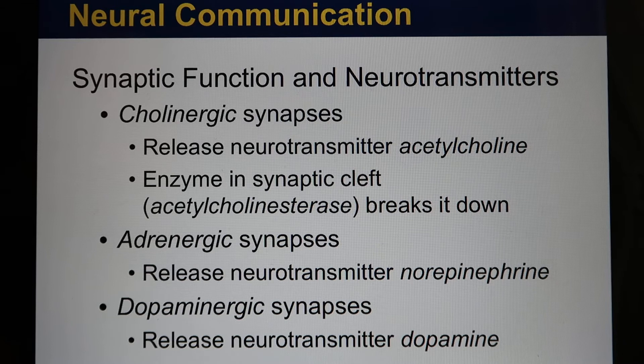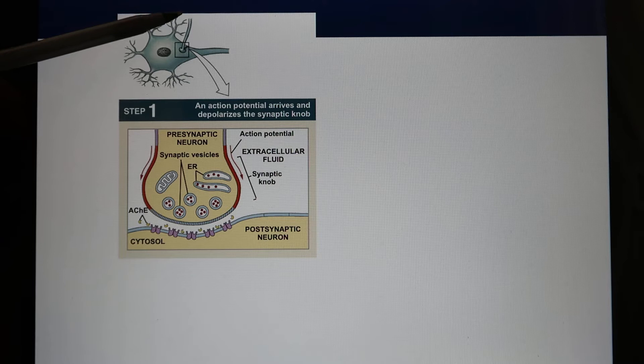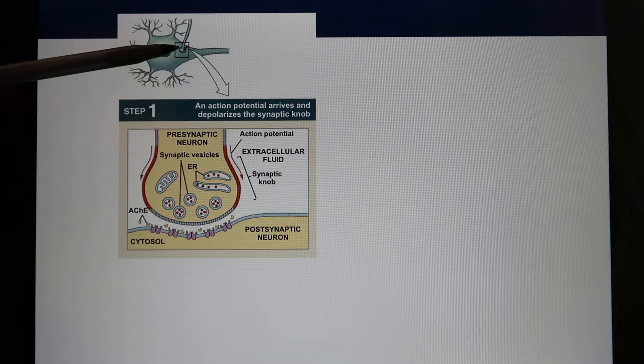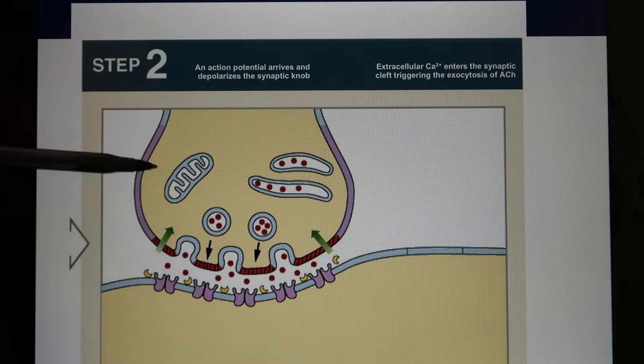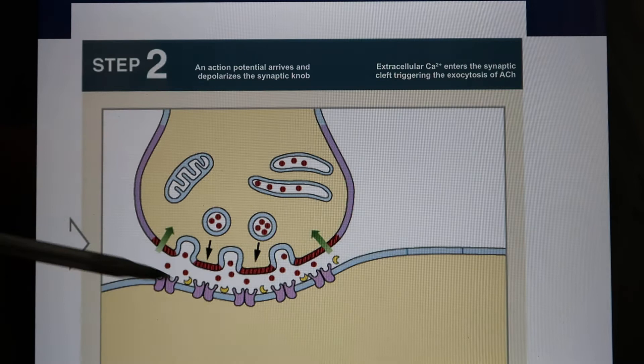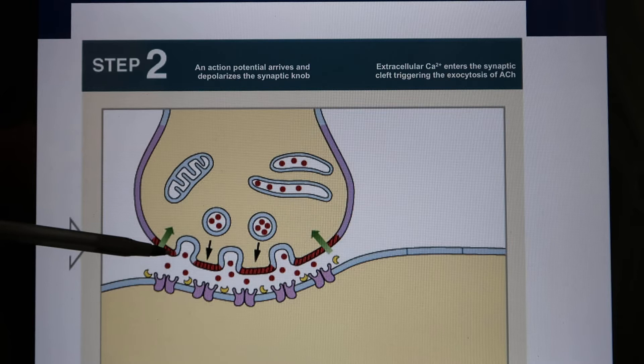In the synapse, the presynaptic neuron extends its axon to touch — to innervate — the dendrite, sometimes the cell body. At this point, the electrical signal is converted into a chemical signal: neurotransmitter release. The neurotransmitters diffuse by simple diffusion from high concentration to low concentration and bind with the receptor on the postsynaptic neuron.